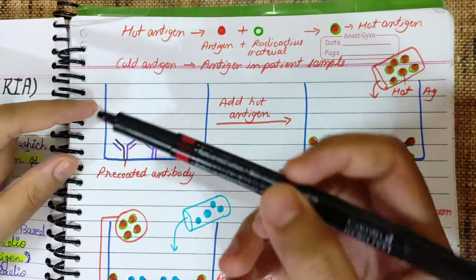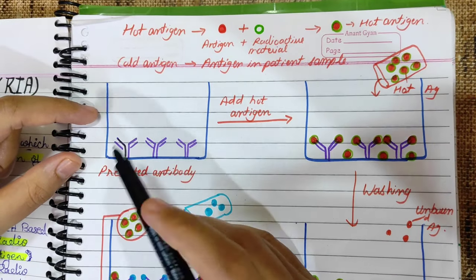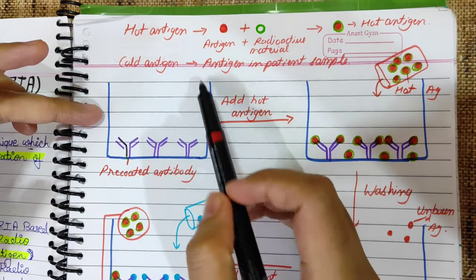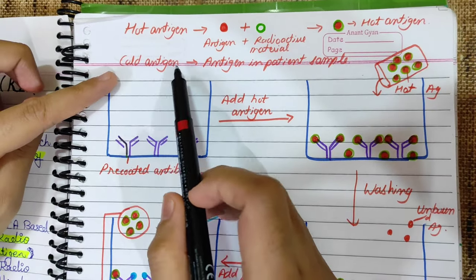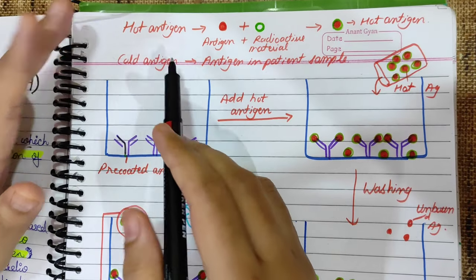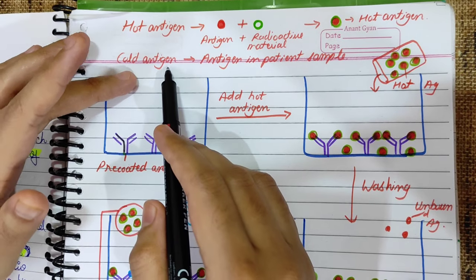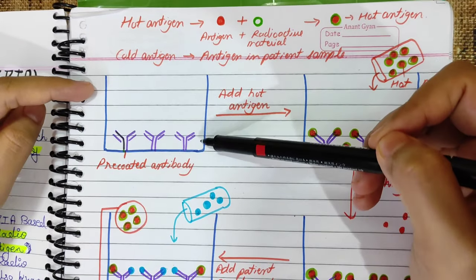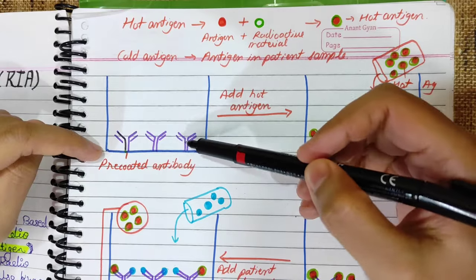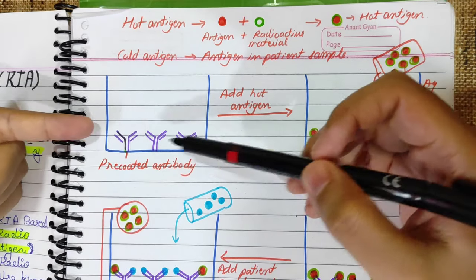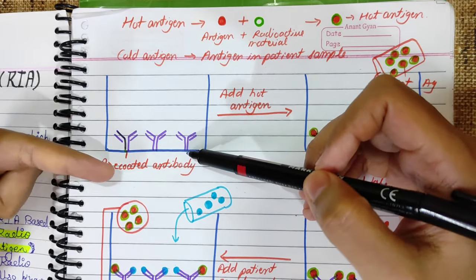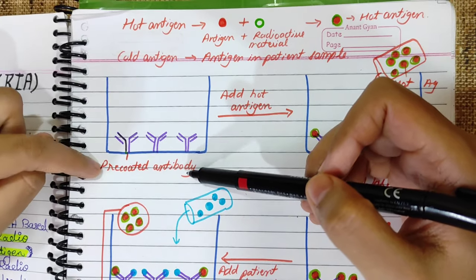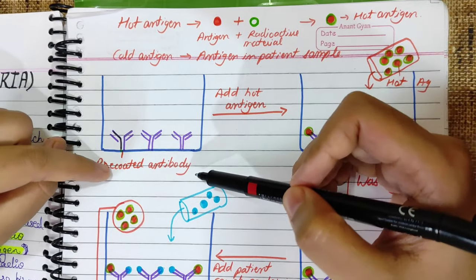How does it happen? First, below is our microtiter plate. We have a microtiter plate used in RIA. RIA detects antigen. We know that to detect antigen, we provide antibody. This microtiter plate has already pre-coated antibody. Pre-coated means the first antibody is put into this plate. For example, this is a GP41 antigen, so here we use a GP41 antibody.